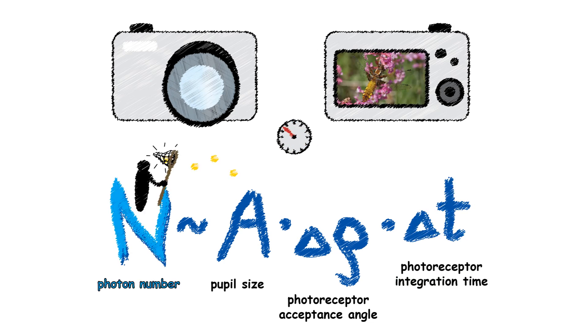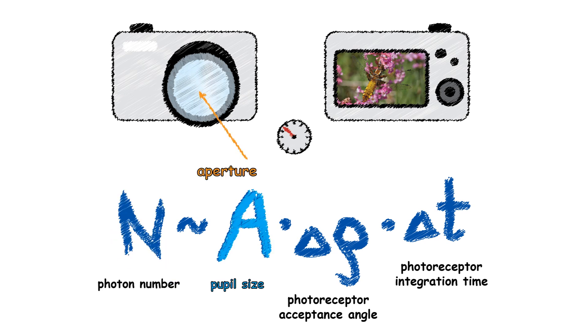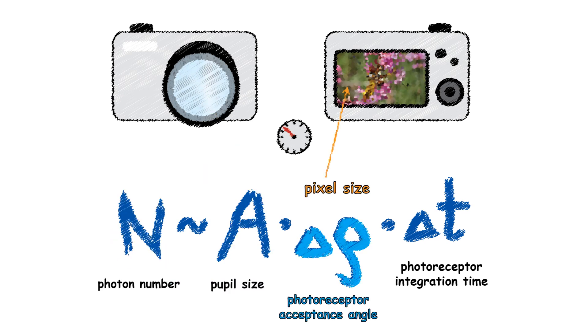In a nocturnal animal, more photons are captured because they have a large aperture, pixel size, and exposure time.